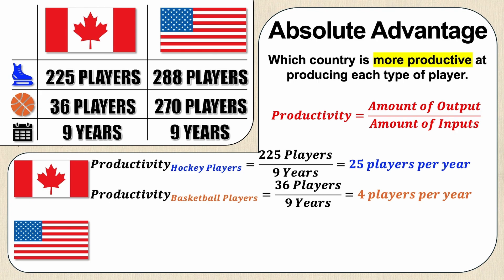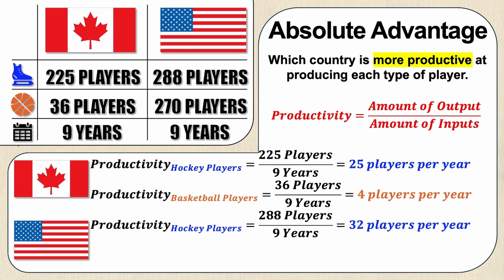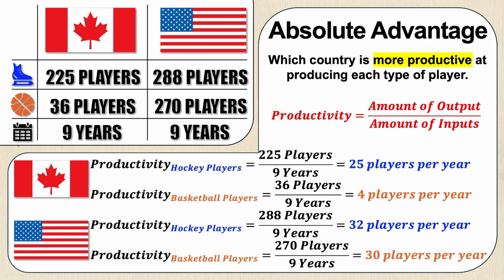What about the United States? Well the productivity for hockey players is 288 players for nine years, or 32 players per year. And then finally for basketball players, the productivity of the United States is 270 over nine years, with just 30 players per year.